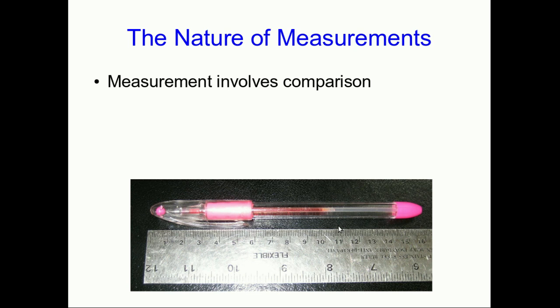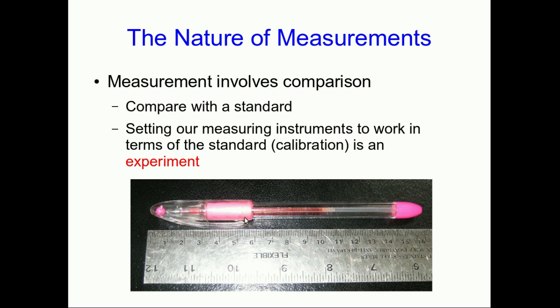Every measurement we do involves some sort of comparison. For example, in the everyday example of just measuring something like this pen, you're comparing the length of the pen with lengths marked off on a ruler. You could compare it with finger widths. You could count your own finger widths along the pen, and that's also a measurement. The difference is that when you're doing it with the ruler, you're working with an agreed-upon standard so that your measurement is meaningful to other people. That standard involved a calibration, which is a sort of experiment.